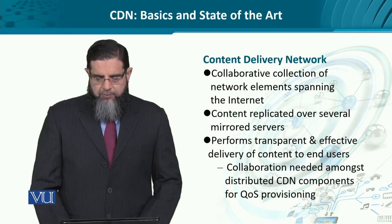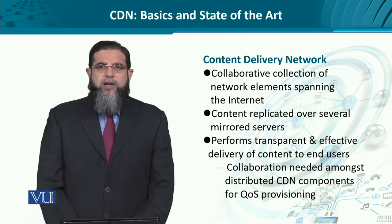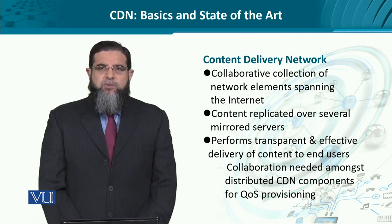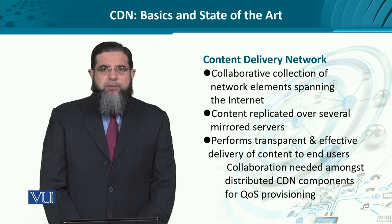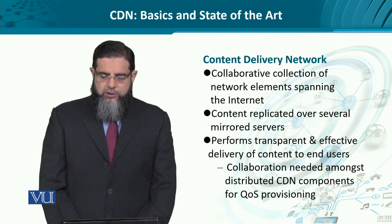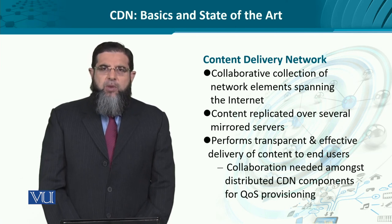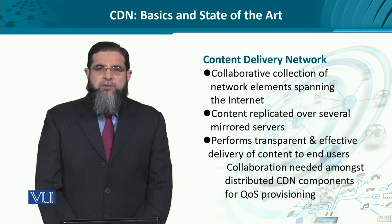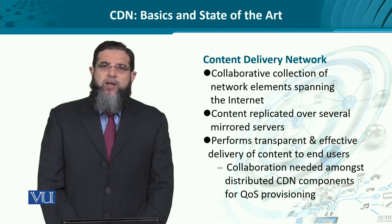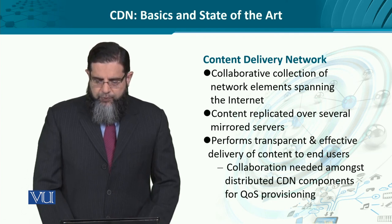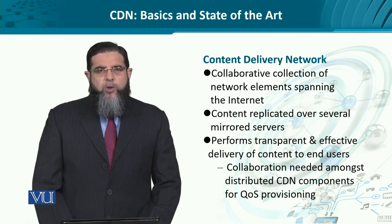A content delivery network is basically a collaborative collection of network elements and servers spanning the internet. Sometimes it is also known as OTT service — over-the-top service. The content is replicated over several mirrored servers. These servers could be mirrored according to any RAID standard — for example, RAID 5. So, the CDNs perform transparent and effective delivery of content to end users.